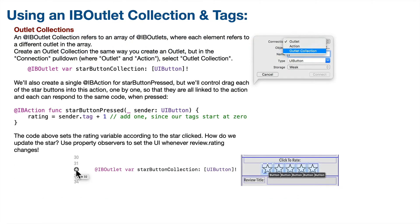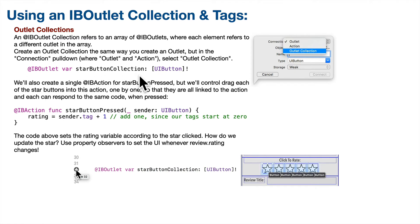As we begin, all of our work is going to be in the review table view controller — that's where our star buttons are. We'll create an outlet collection instead of just a single outlet for our first star button. An outlet collection is an array of IB outlets, and it's super useful because if you need to reach all of the outlets in a collection, you can just iterate through the array.